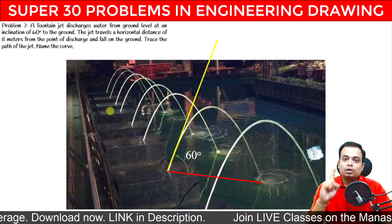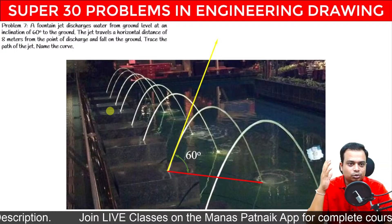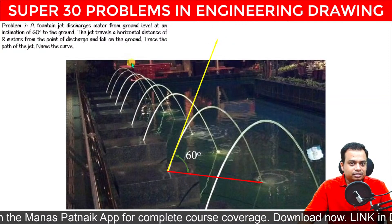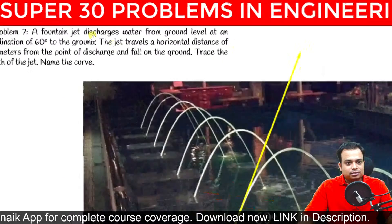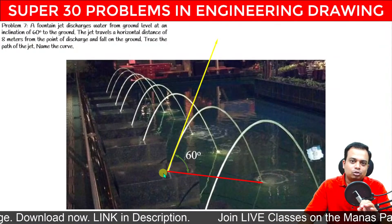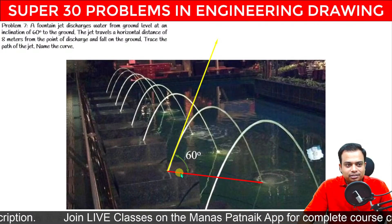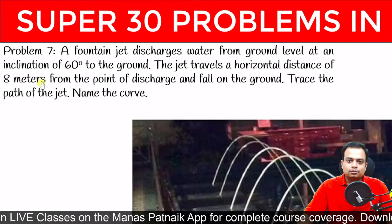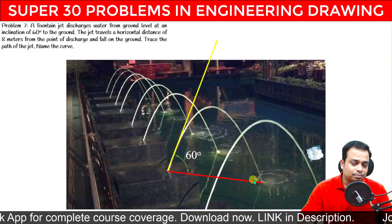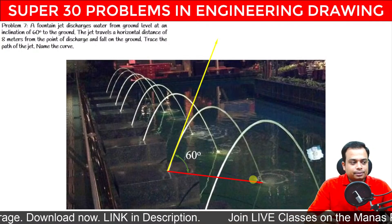Please let me know if both the audio and video are clear. So we've got a water jet, water is being shot from here, and the angle of shooting is 60 degrees. Another thing that has been given is that this jet travels a horizontal distance of 8 meters from the point of discharge. You need to make this curve. This is a very realistic problem based on a parabola. Name the curve.